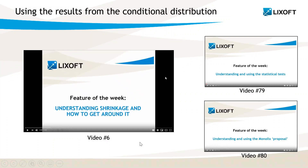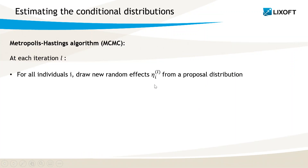Note that the feature of the week video number 6 explains in more detail how the sampled parameters are used in Monolix to circumvent the phenomenon of shrinkage. Videos number 79 and 80 also show how these parameters are used to provide informative statistical tests. In the present video, I will now focus on the conditional distribution task itself. The task uses one of the possible Markov chain Monte Carlo algorithms, called the Metropolis-Hastings algorithm.